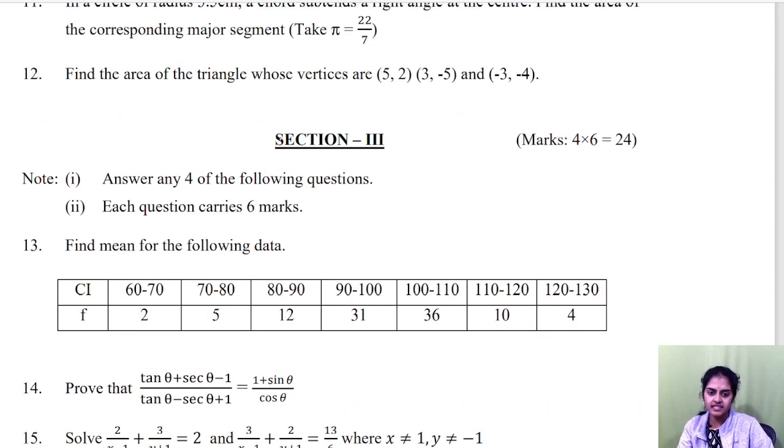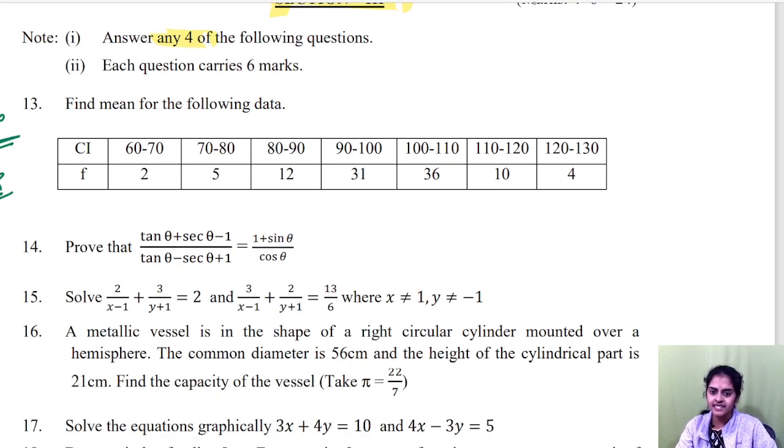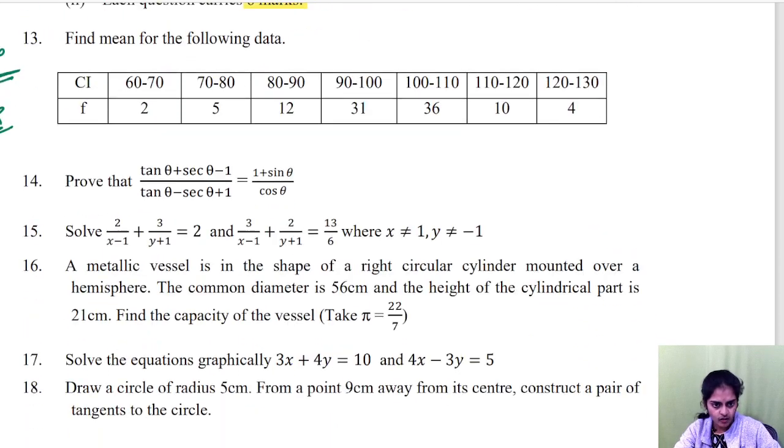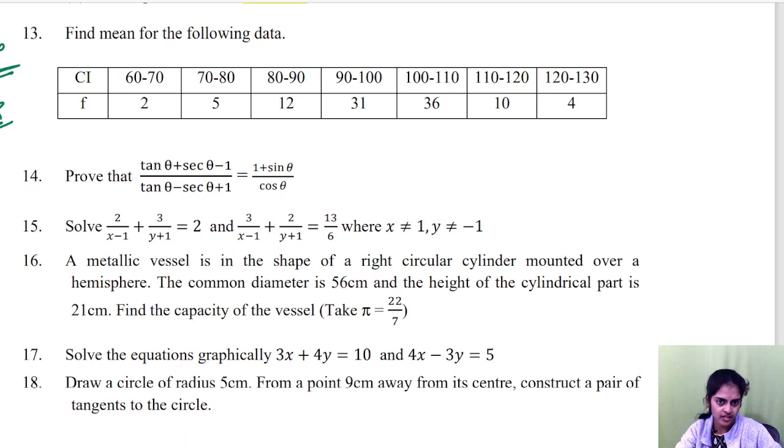Then section 3, there is a choice. They will give you 6 questions. You should answer any 4. You should answer any 4 out of 6. So there is a choice here. Now each question carries 6 marks. Earlier it was less, now it is 6 marks. They will give you total 6, any 4 you have to answer. So you have a good choice here.